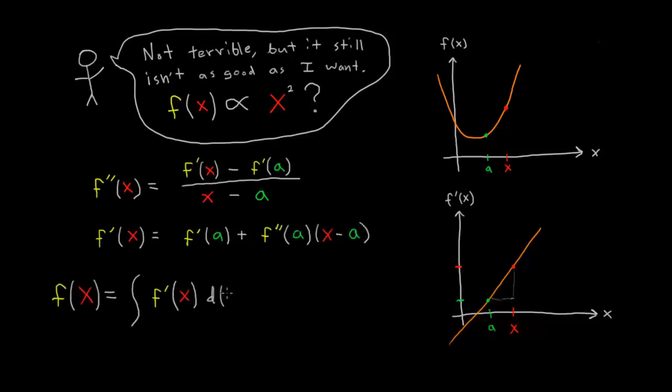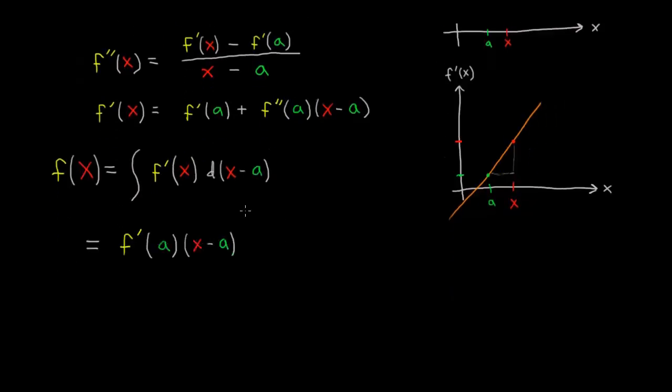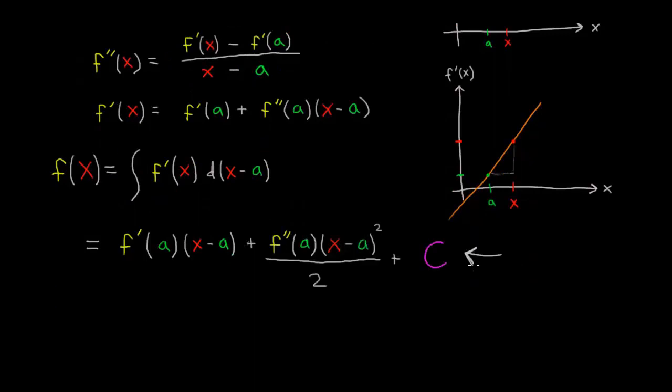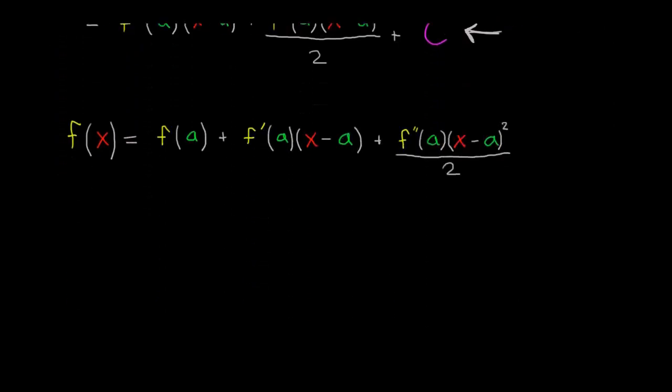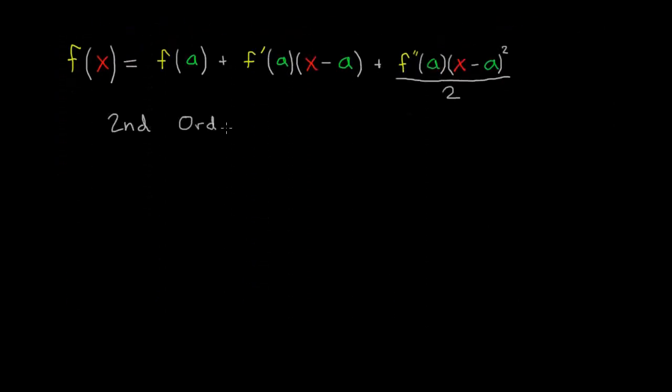And now to get F, Taylor just needs to integrate F prime. To find the constant of integration, Taylor uses the fact that plugging in X equals A into F of X must give the value F of A. The result is a second order approximation, because F depends on X squared.